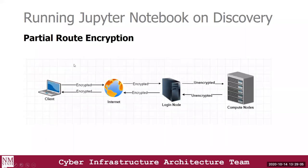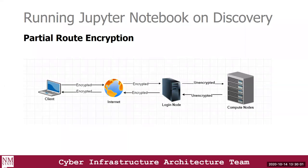After the second method, this is what the architecture looks like. From your workstation through the internet to the login node at discovery.nmsu.edu, it's all encrypted. However, from the login node to the compute nodes where your jobs get submitted, it's not encrypted. If someone is trying to attack or sniff data, it would come from within the NMSU network. The next method I'll show is how you can fully protect these access routes and access Jupyter Notebook via your browser with confidence that no one is going to sniff on your sensitive data.